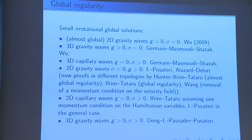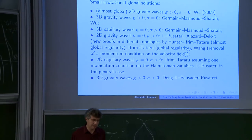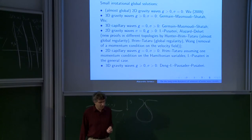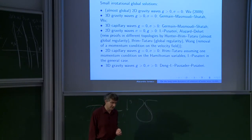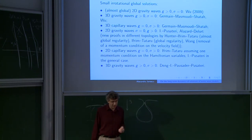The first result of this type was an almost global result of Wu from 2009, proving almost global regularity for 2D gravity water waves — gravity means the gravity coefficient is positive but the surface tension coefficient is zero. This was followed by Germain-Masmoudi-Shatah in three dimensions for the same problem. One can also look at capillary water waves where g equals zero and sigma is positive — also work of Germain-Masmoudi-Shatah. Afterwards, Fabio Pusateri and I, and at about the same time Alazard-Delort, looked at the 2D gravity problem and proved global regularity, passing from almost global to global.